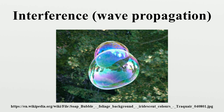At some points these will be in phase and will produce a maximum displacement. In other places, the waves will be in antiphase, and there will be no net displacement at these points. Thus, parts of the surface will be stationary. These are seen in the figure above and to the right as stationary blue-green lines radiating from the center.